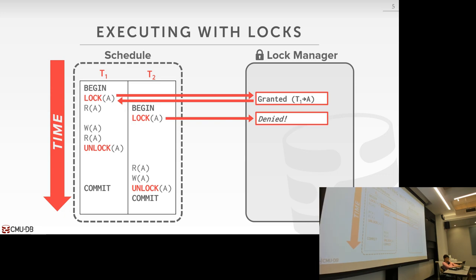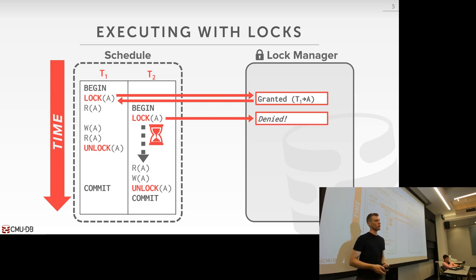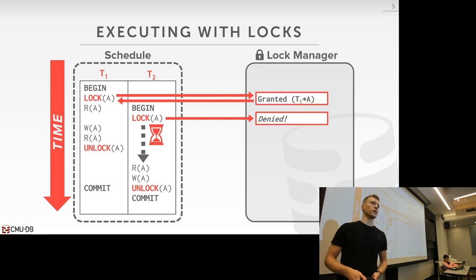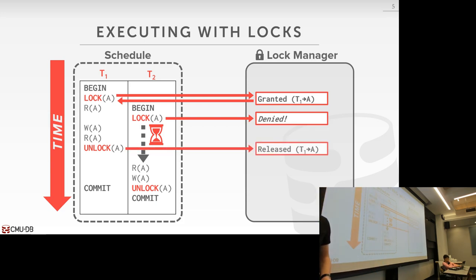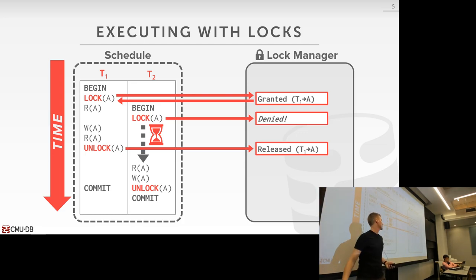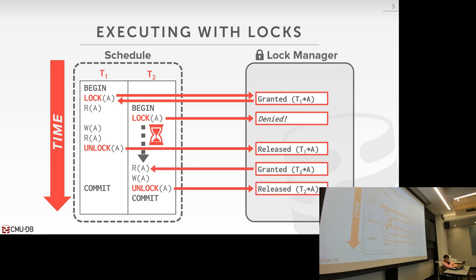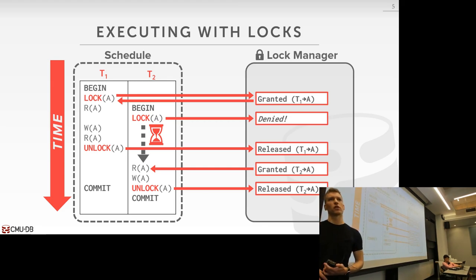T2 is denied by the lock manager and the only thing it can do is stall. T1 proceeds, does its write and read, then releases the lock. The lock manager then tells T2 it can get the lock on A, grants it, T2 does what it needs to do, and releases the lock. That's conceptually how we use locking in the system — there's a bit more nuance, which we'll go through in the rest of the lecture.